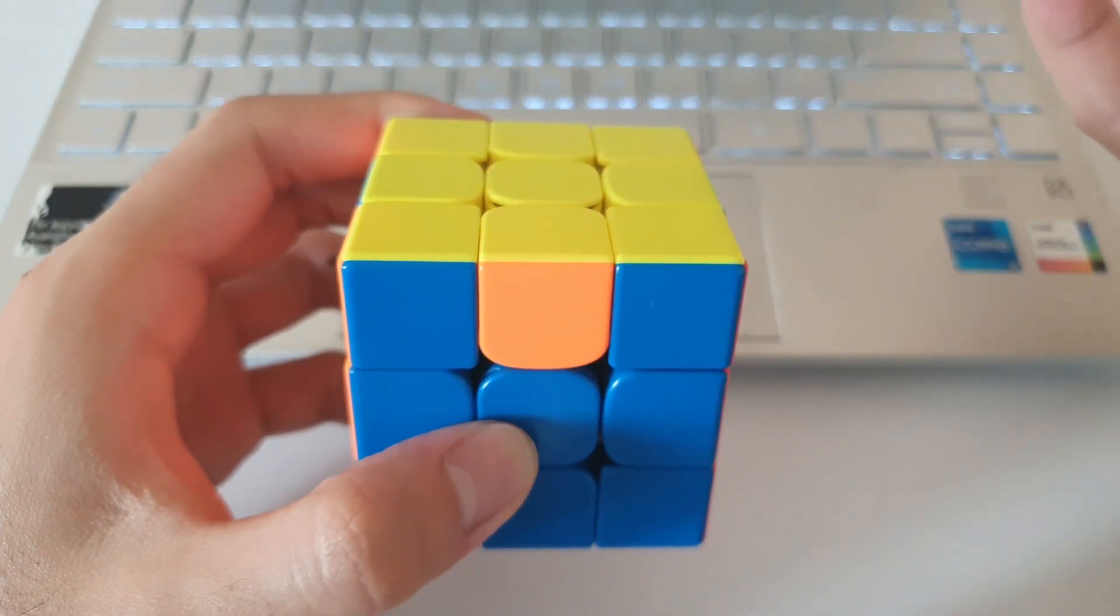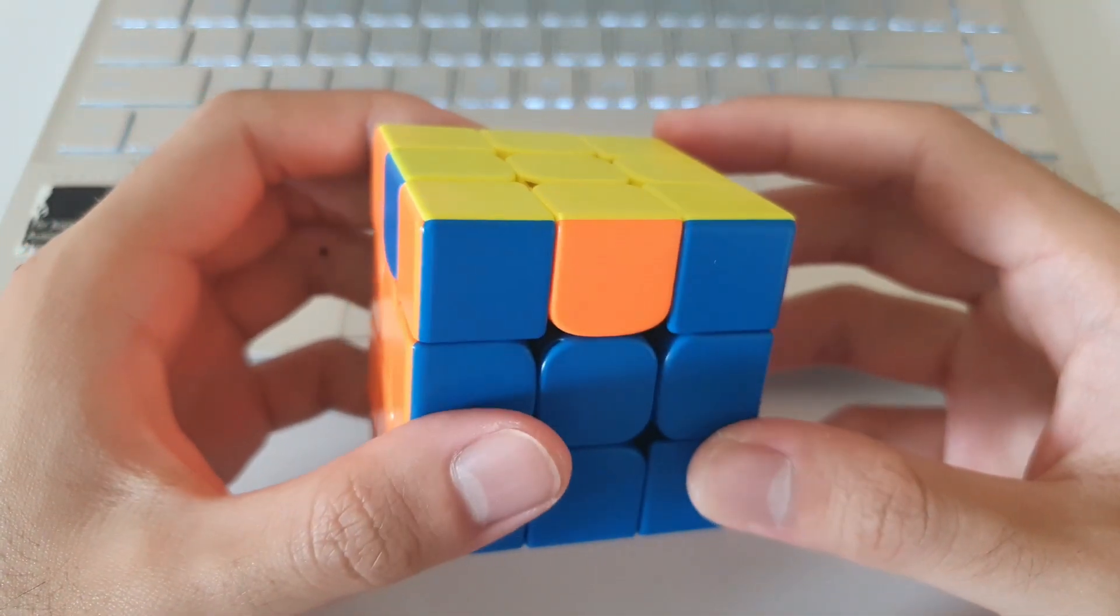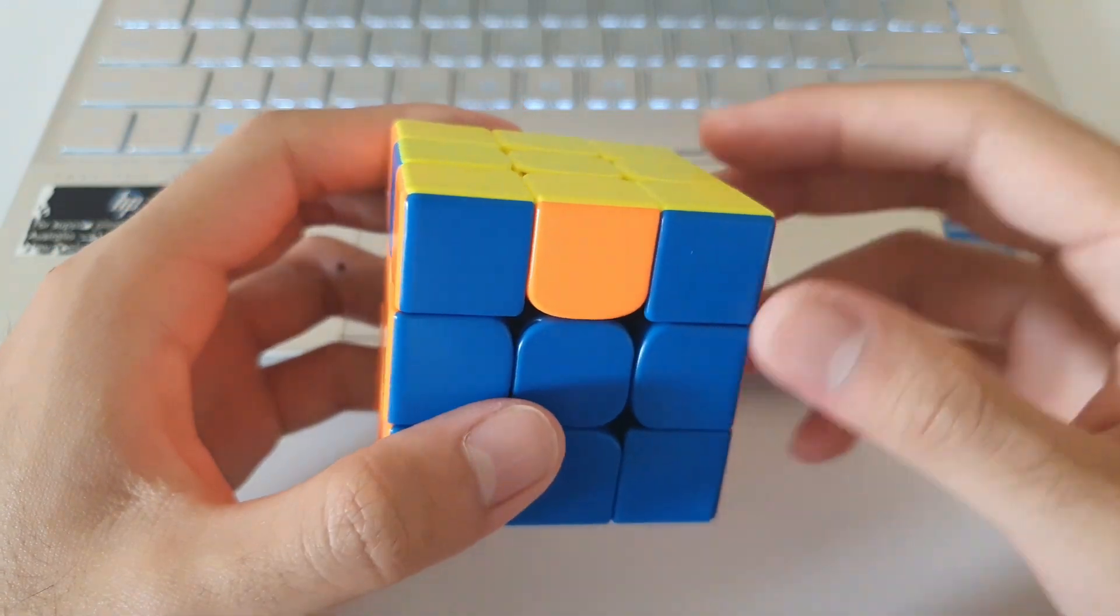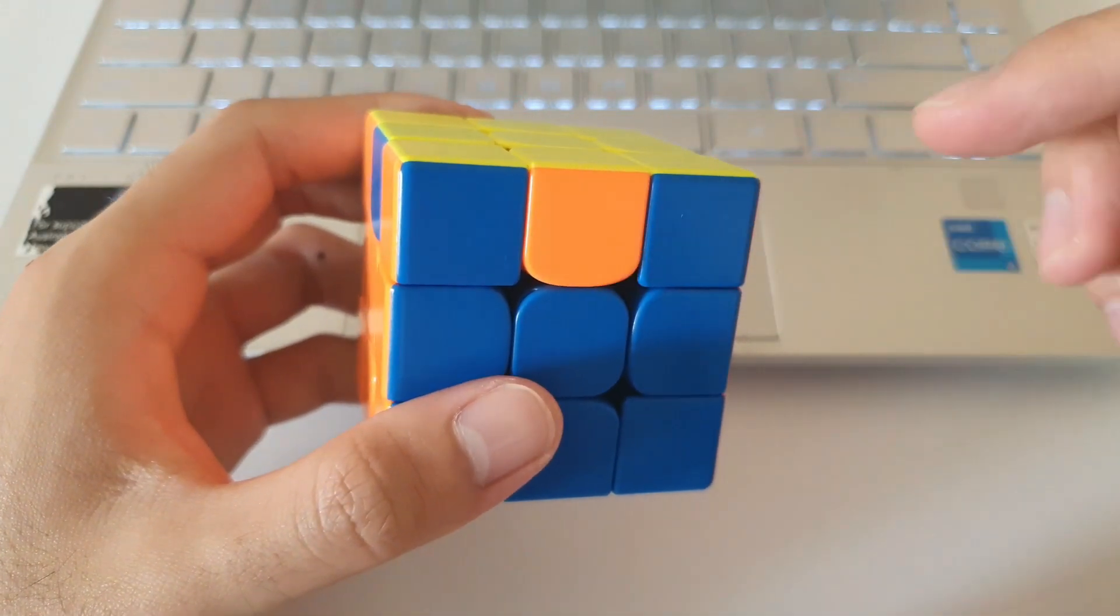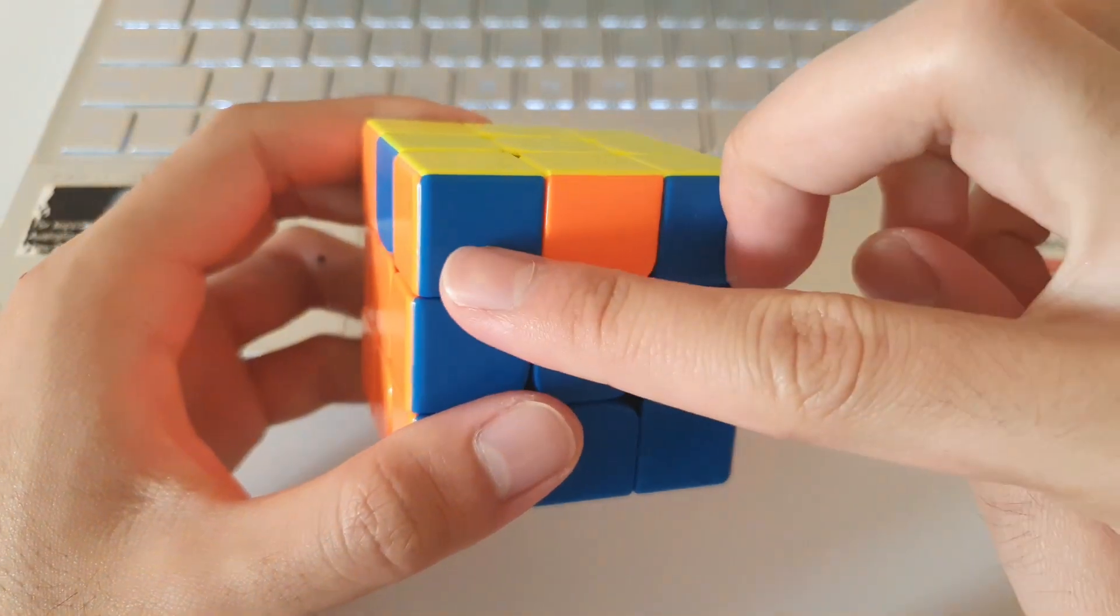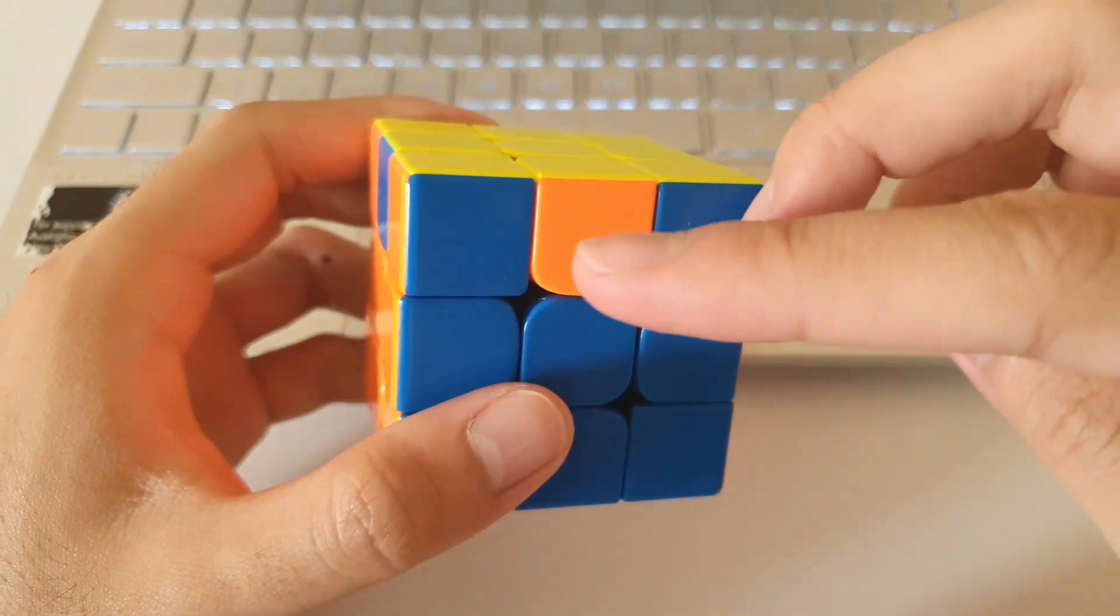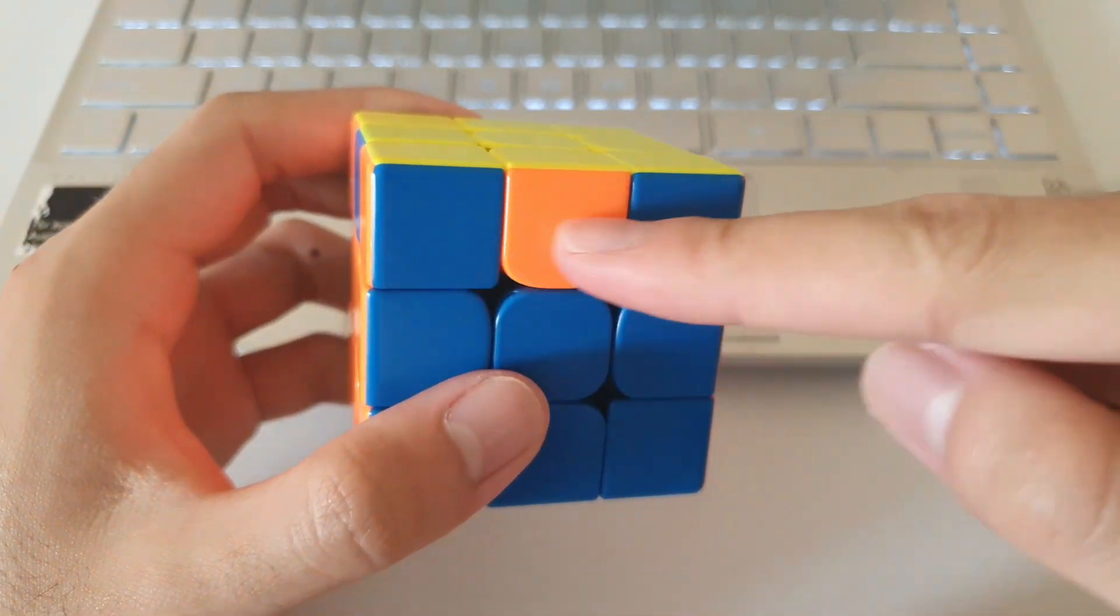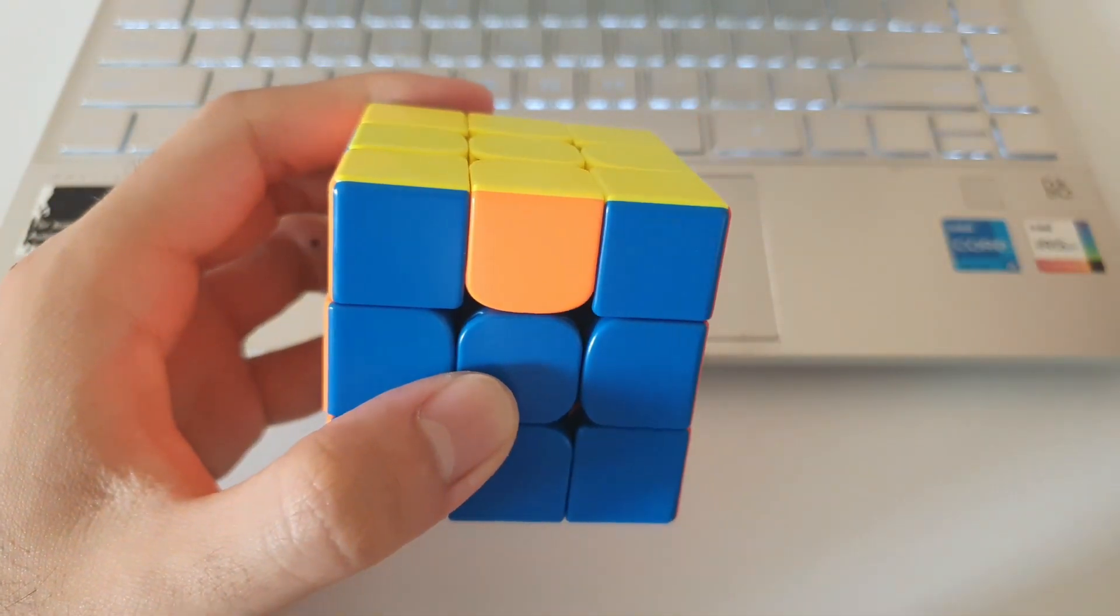Similar to the M prime algorithm, the M2 algorithms also have a pretty weird AUF recognition technique. Instead of looking at the edge color, we're instead looking at the headlights color. And once again, we'll have to recognize that it's always the opposite color to the headlights that end up at the front. So once again, as an example, we have blue headlights here.